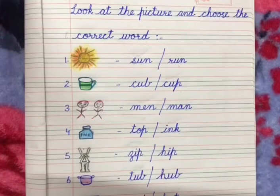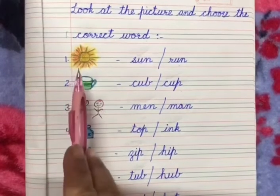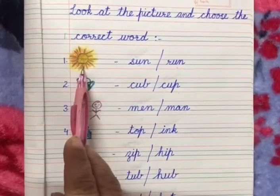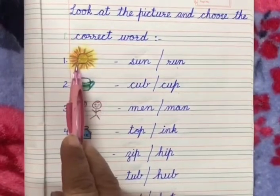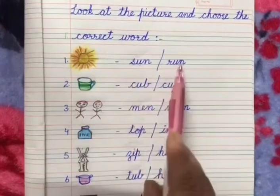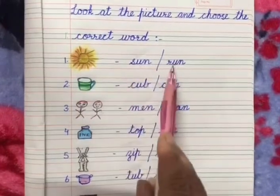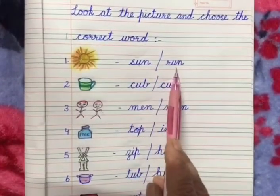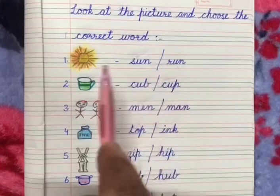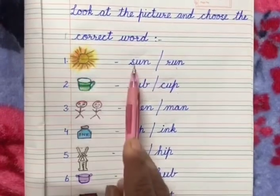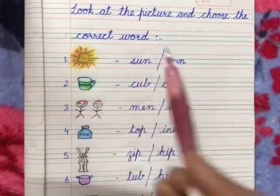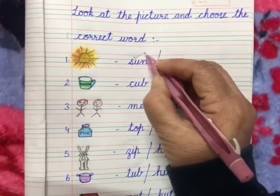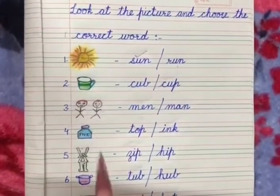The first one — look at the picture, it is the sun. Two words are given here: one is 'sun' and another one is 'run', but the correct word for the picture is 'sun'. So we are going to put it here. See the next one.